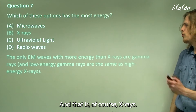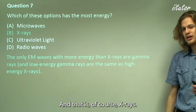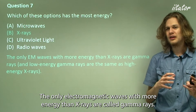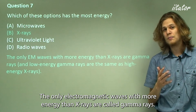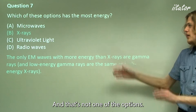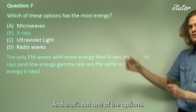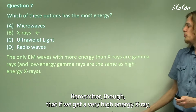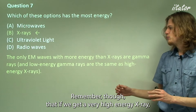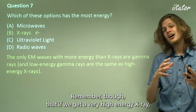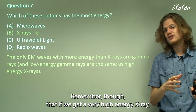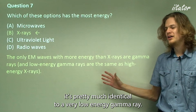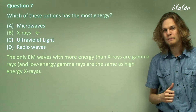The answer is, of course, x-rays. The only electromagnetic waves with more energy than x-rays are gamma rays, and that's not one of the options. So the answer is B, x-rays. Remember that a very high-energy x-ray is pretty much identical to a very low-energy gamma ray.